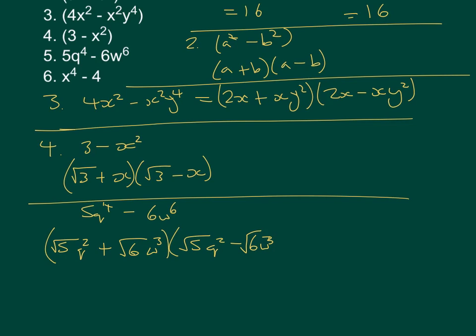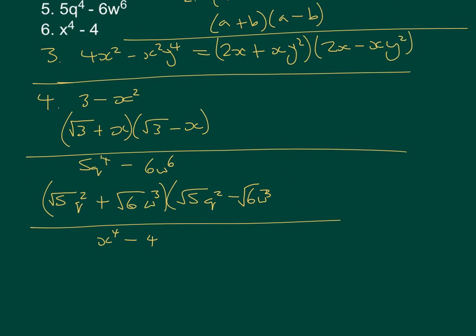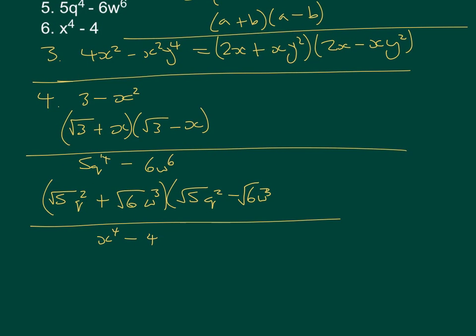And then finally, the last one, we've got x⁴ - 4. Now both of these are square numbers, so you might think that this one is easier than what we've just done. But what we get is (x² - 2)(x² + 2).